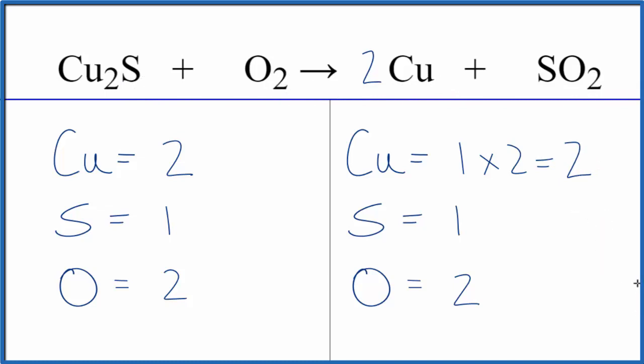This is Dr. B with the balanced equation for Cu2S plus oxygen, yields copper and sulfur dioxide. Thanks for watching.